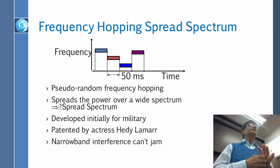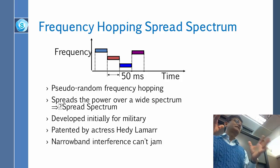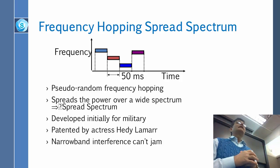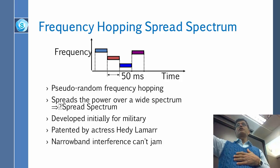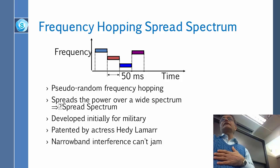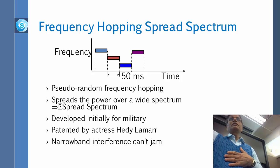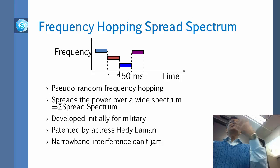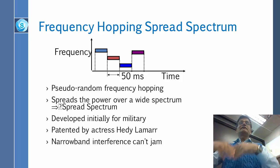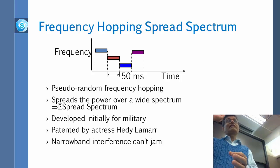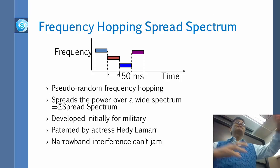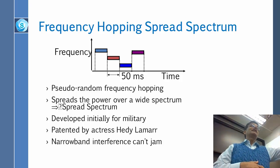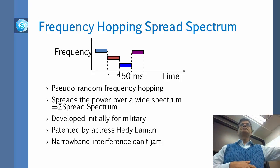The way we do the random order is by using a random number generator, and the receiver knows it. Let's say I want to talk to her, and I say, here is my random number generator. Now I can keep talking, changing the frequency, and she will get the right frequency at the right time. But somebody else who doesn't know the random number generator will not be able to go to those frequencies, so they will not be able to listen.